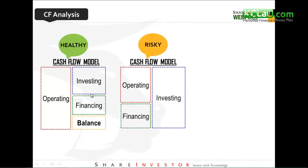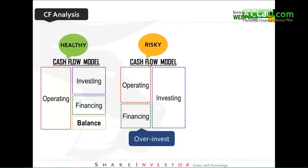The second model is a bit risky. The cash generated from operating is not enough to invest, so the company has to use another source — financing from a bank or through a rights issue — to cover investing. A current example is AirAsia, where operating cash flow is not enough to buy aircraft, so they need further financing instruments. They can do a rights issue or borrow from a bank, which is why you may have heard AirAsia is going to do a rights issue.